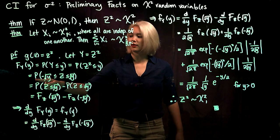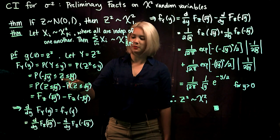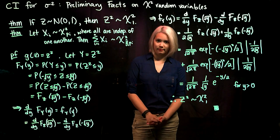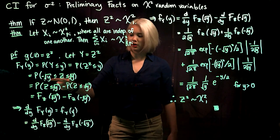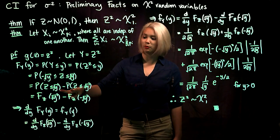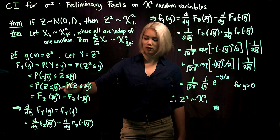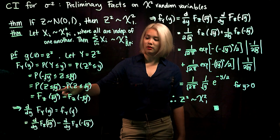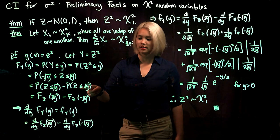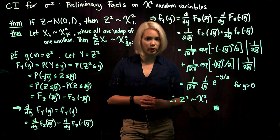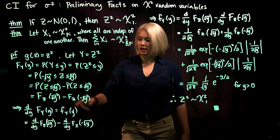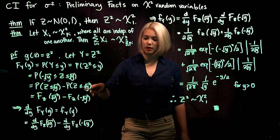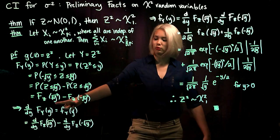So far for the CDF, it's the probability that our standard normal random variable Z is between negative square root of y and positive square root of y. Using the common trick for a variable bounded between two values, we split it into the difference: the probability that Z is less than or equal to square root of y, minus the probability that Z is less than negative square root of y. We can recognize these as the CDF for Z evaluated at square root of y and at negative square root of y.